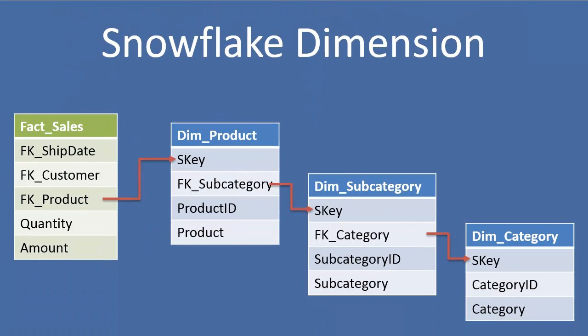Here's a quick example. We have a fact table with a product foreign key which of course is pointing to our product dimension. Then that product dimension is pointing to a subcategory dimension which in turn is pointing to a category dimension. This is a normalized dimension or a snowflake dimension.